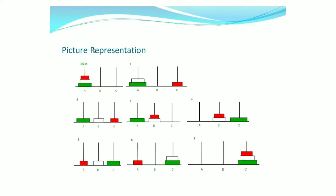Let us take a look at the picture representation of Tower of Honor. There are 3 rods: rod A, rod B, and rod C. In rod A, we have 3 disks.